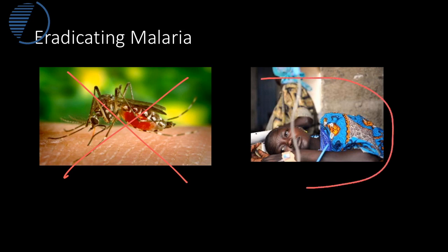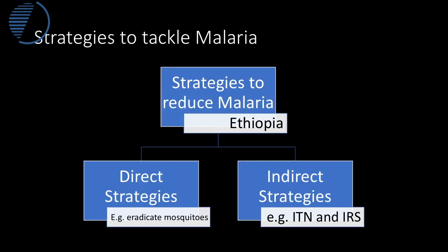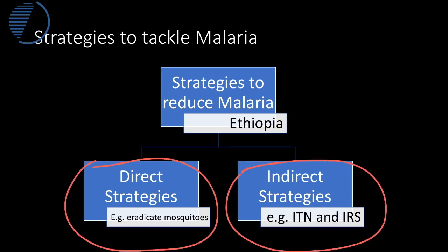You can also prevent people who have the parasite from falling sick — perhaps by vaccinating them or protecting them from being bitten. In Ethiopia, two kinds of strategies are deployed: direct strategies which eradicate mosquitoes, and indirect strategies which have been a key focus for the government, including the use of nets and sprays.